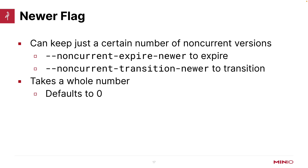We're going to do a little demo of that in our next video. By default this is zero — it's not going to keep any non-current versions or transition any non-current versions. But this whole number allows you to keep a certain number of versions. This is probably one of the most powerful tools that I use when I'm doing transitions with versions.